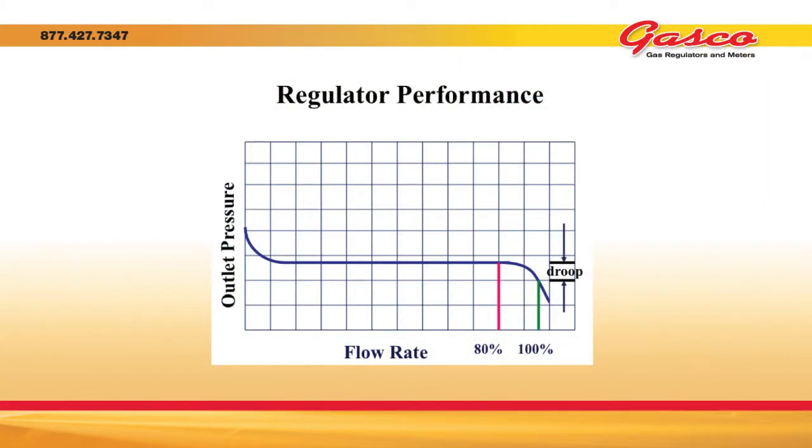A gas regulator works exactly the same way. As you approach the upper end capability of the regulator, it will start to sacrifice pressure to maintain flow rate. However, a regulator has some inherent design characteristics that do not produce the ideal curve. Droop is most evident and has the most dramatic effect in the last 20% of the flow range of the regulator, as demonstrated by the performance curve.